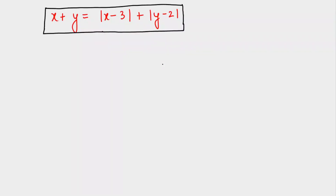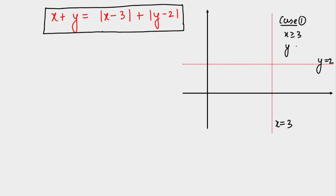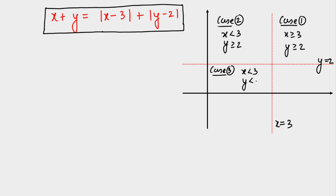To solve this, I draw the vertical line x = 3 and the horizontal line y = 2, dividing the region into four cases. Case 1: x ≥ 3 and y ≥ 2. Case 2: x < 3 and y ≥ 2. Case 3: x < 3 and y < 2. Case 4: x ≥ 3 and y < 2. We work through all four cases to see where the locus exists.